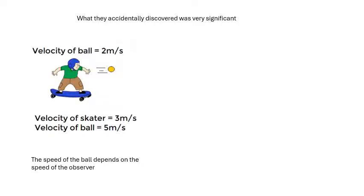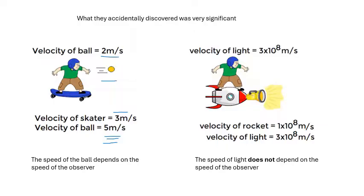What they accidentally discovered was - now first of all, kid on a skateboard chucks a ball at two meters per second. Okay, so if the skateboard's going at three, then the ball travels at five. Yeah, because it's relative. The speed of the ball depends on the speed of the observer. The kid sees the ball going at two. Somebody looking onwards would see it going at five.